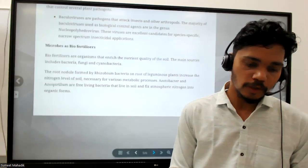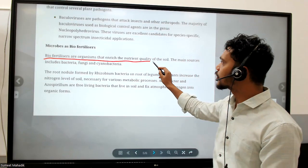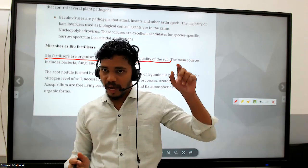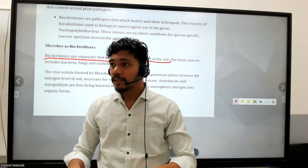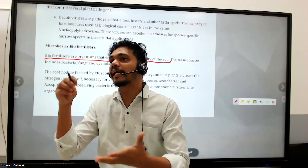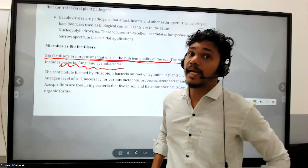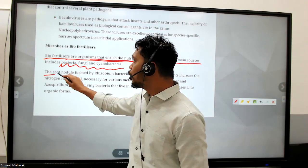Biofertilizers are organisms that enrich the nutrient quality of the soil without harming it - they just add nutrients. For example, insectivorous plants do photosynthesis but need nitrogen or phosphorus that is not present in the soil, so they tend to eat insects for nourishment. The main sources of biofertilizers include bacteria, fungi, and cyanobacteria - also called blue-green algae.